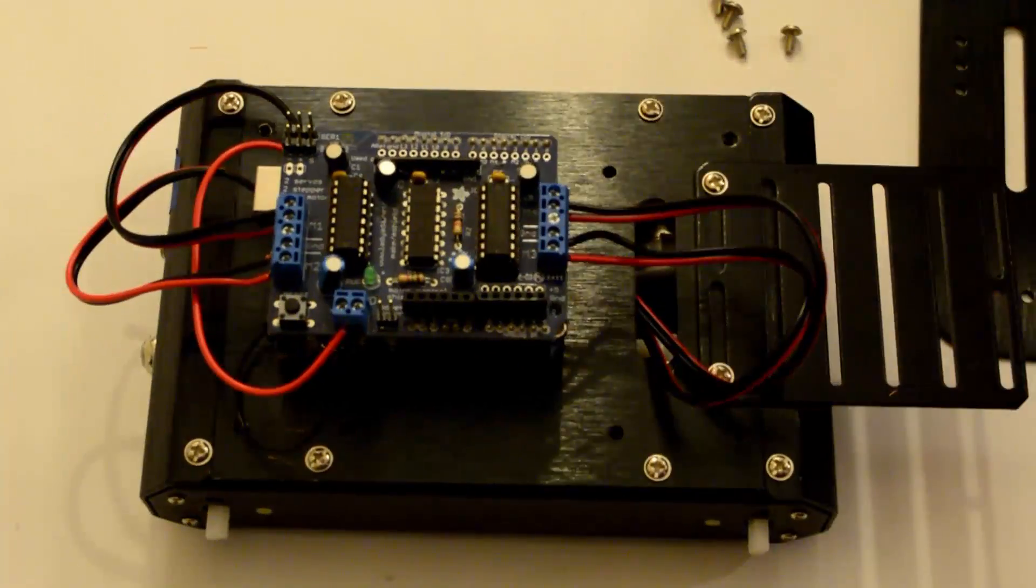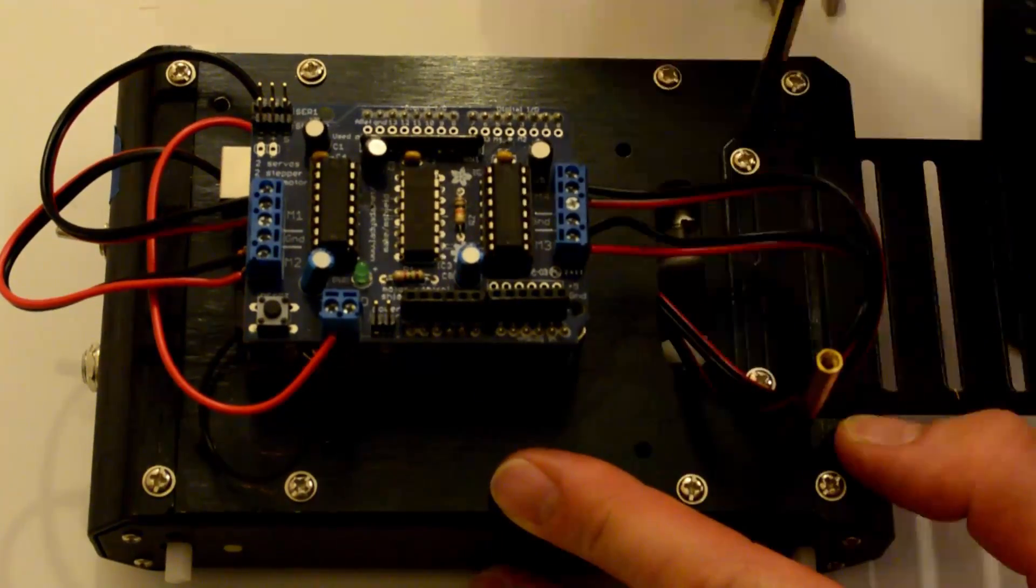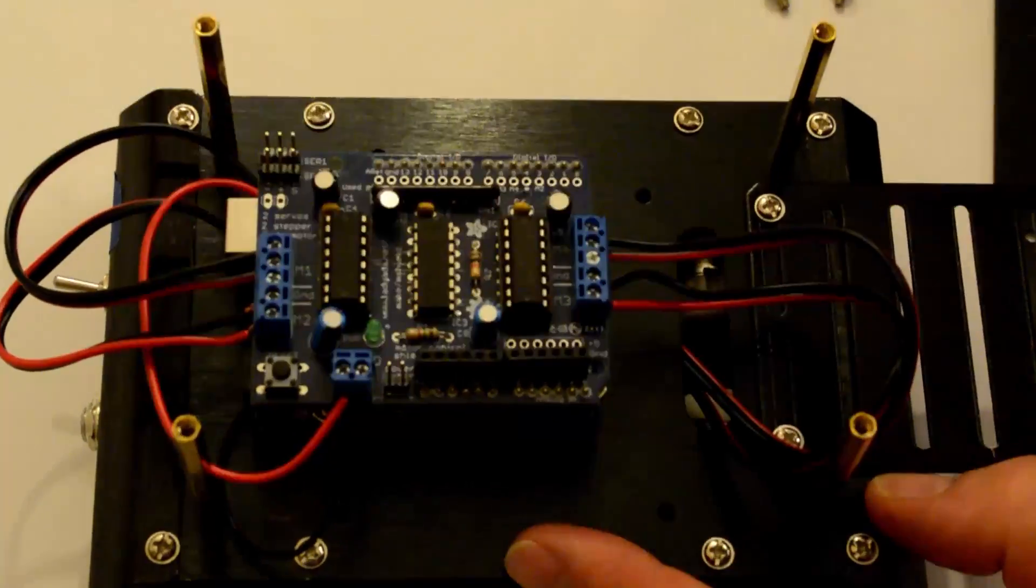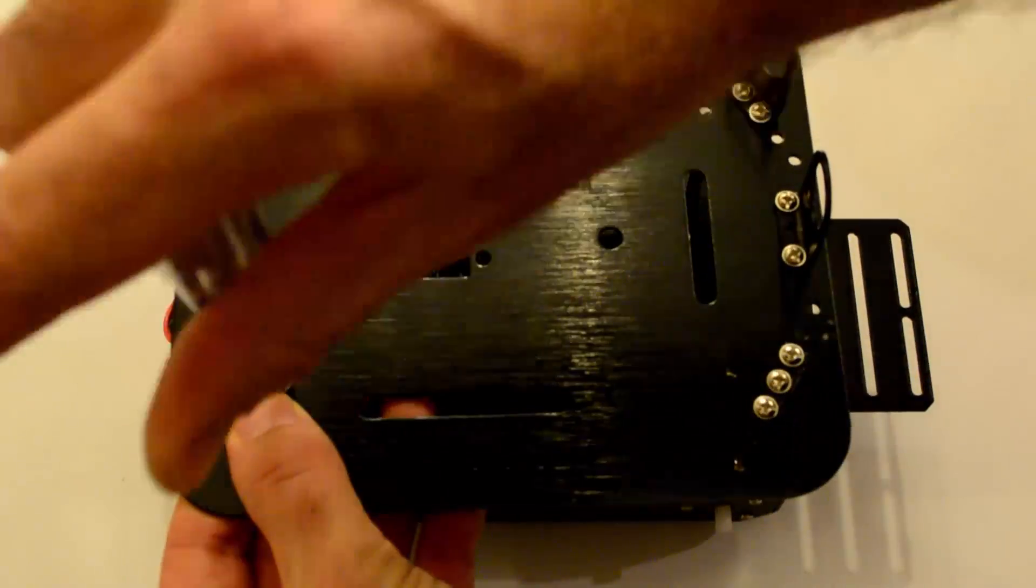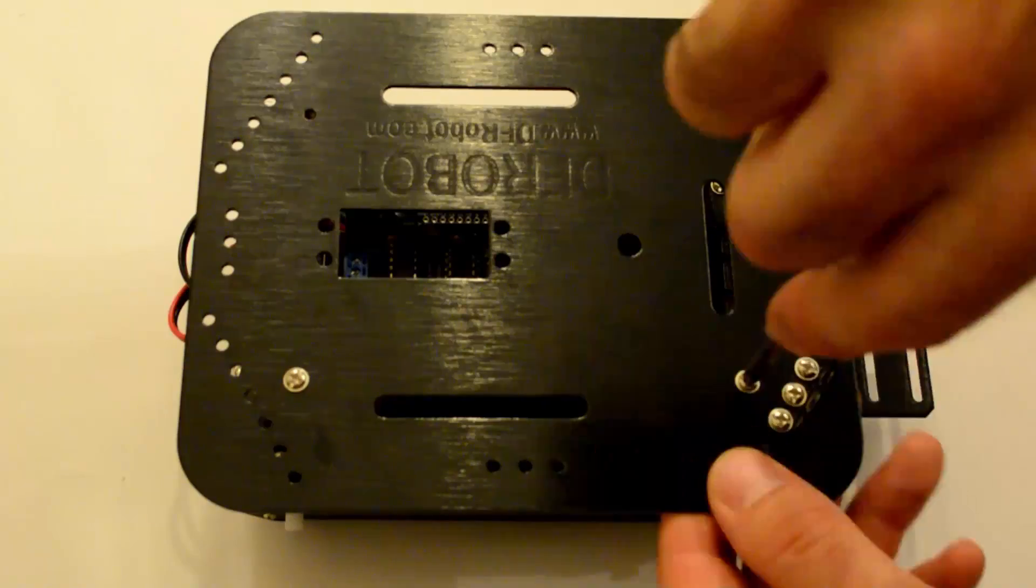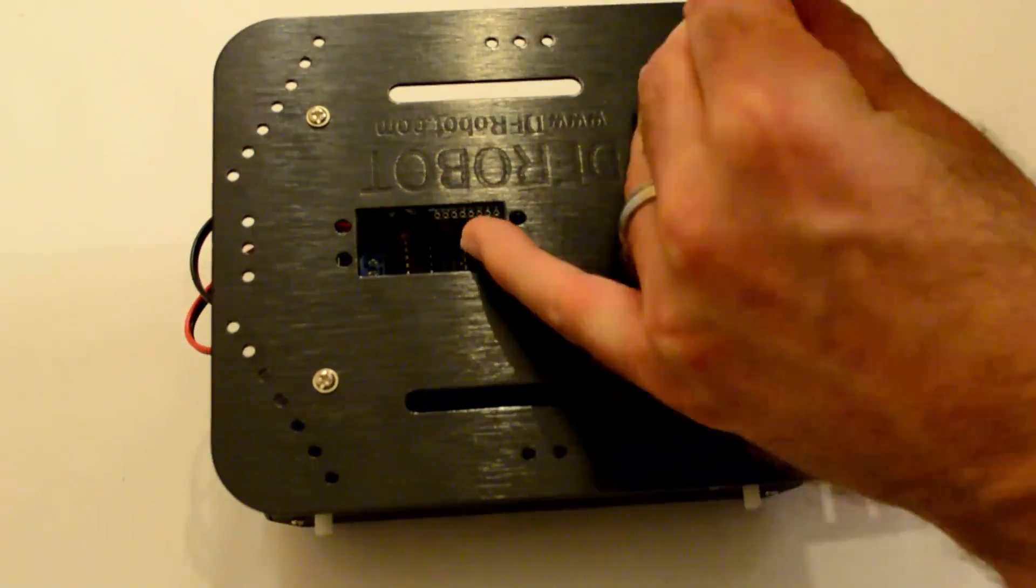Now take the four long copper standoffs and screw them directly into the corners of the top plate. Then simply line that upper deck with those holes and then you just screw the upper deck right into those standoffs.